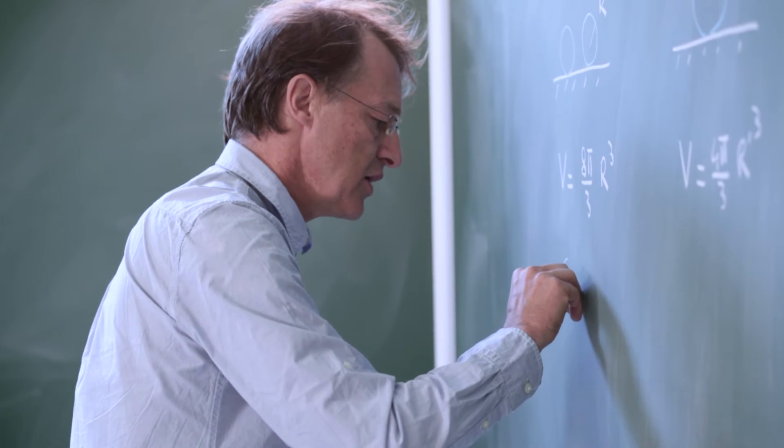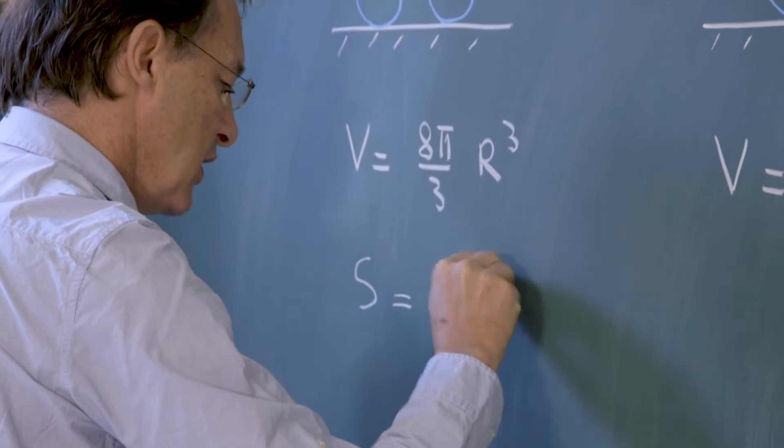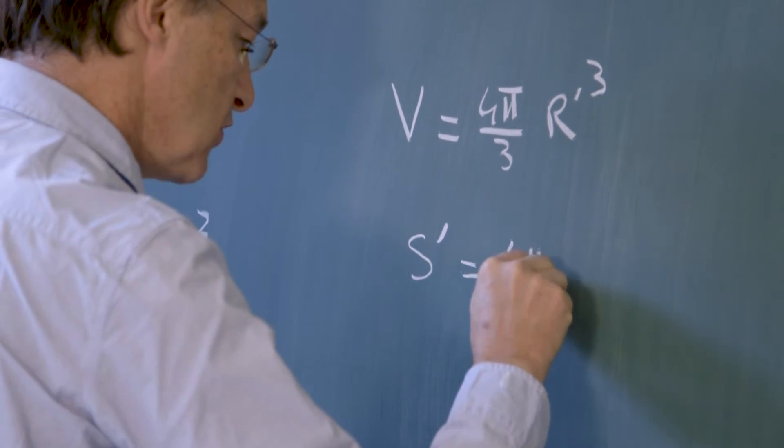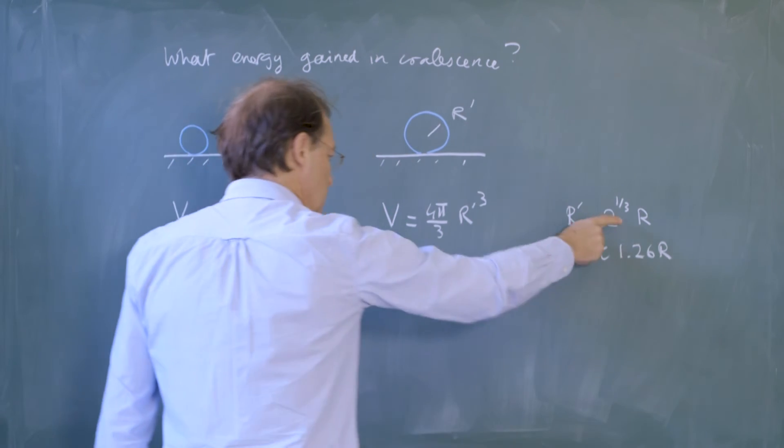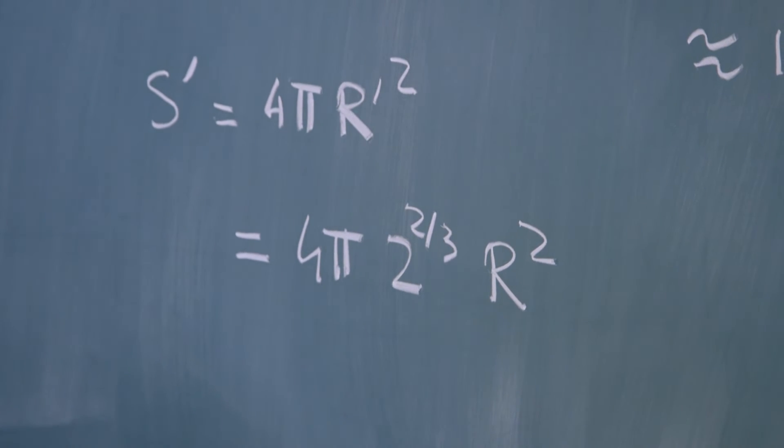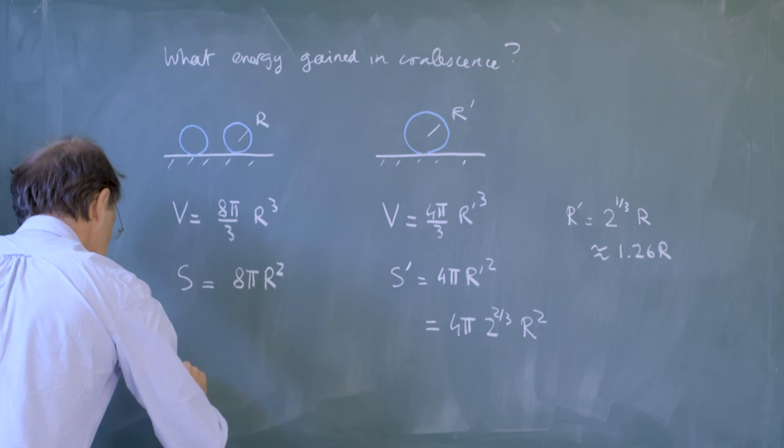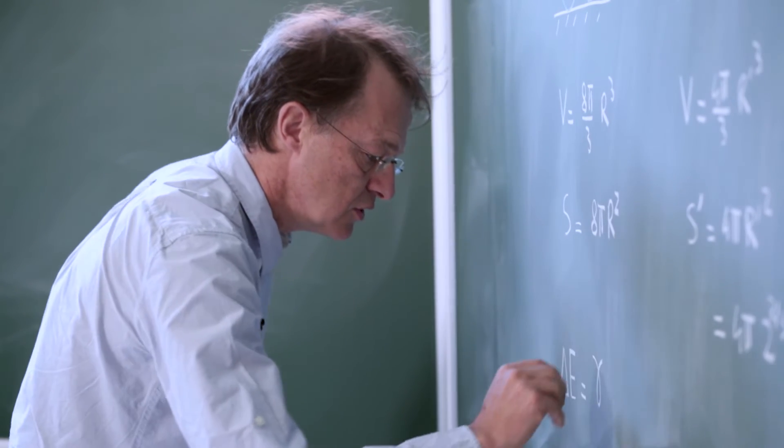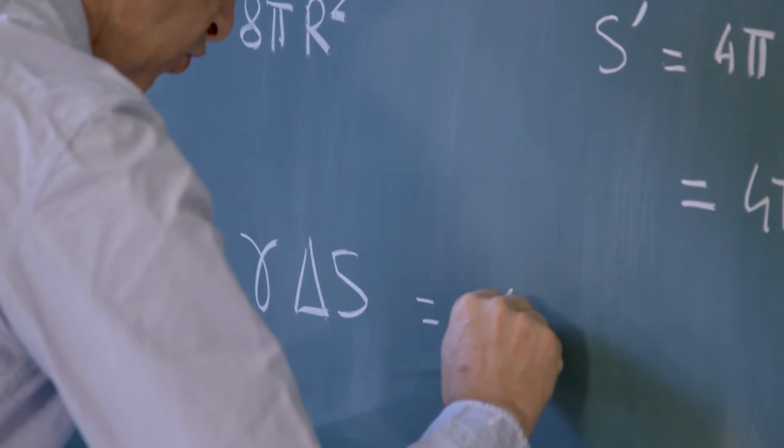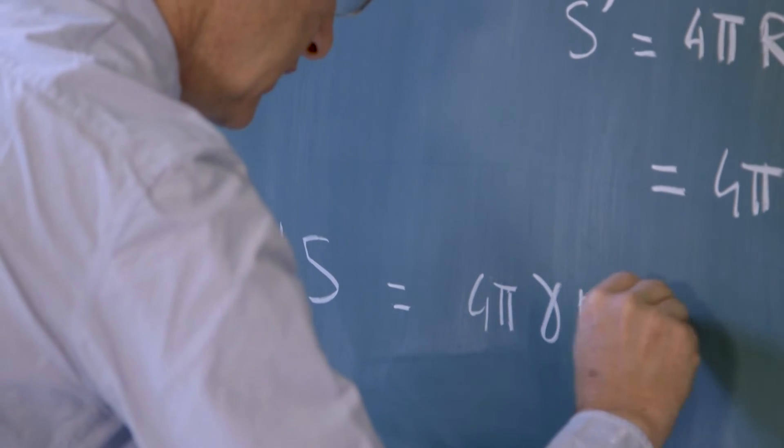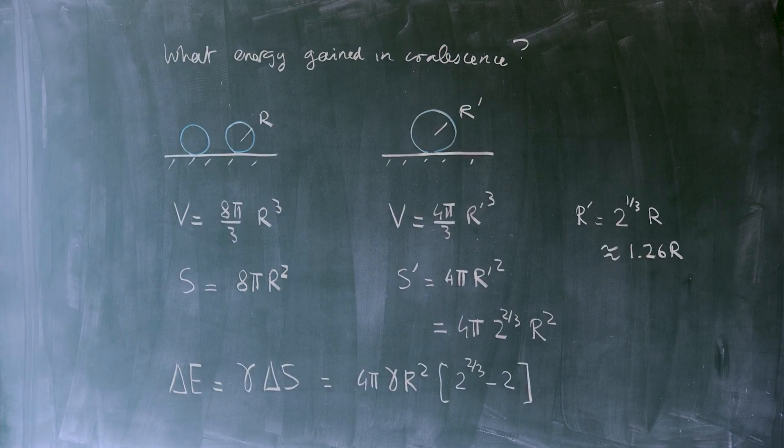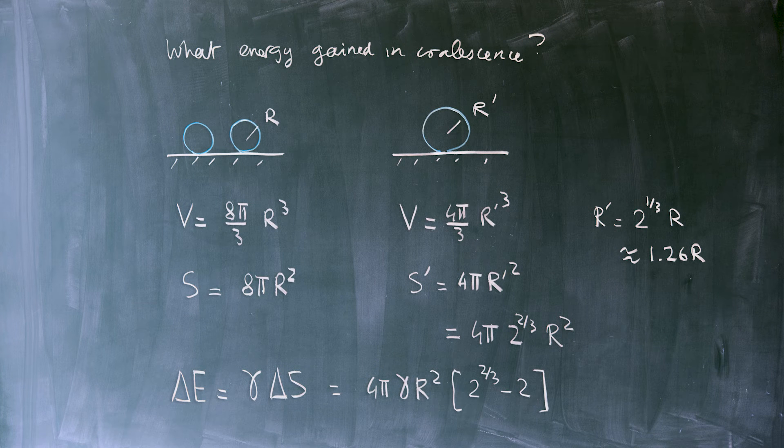So, the surface area is not conserved. We start from a surface area, which is a surface area of two spheres, which is 8 pi r square. And we end up with a surface area s prime, which is a surface area of a single sphere with radius r prime. And because we know the value of r prime, we can express what it is, 4 pi 2 to the 2 thirds times r square. And so, these quantities are not the same, and there is a change in surface energy, delta e, which is surface tension of water times delta s, the variation of surface area, which is 4 pi gamma r square times a number. And this number is 2 to the 2 thirds minus 2, a number which is negative, which means that the surface energy was lowered in the process of coalescence.